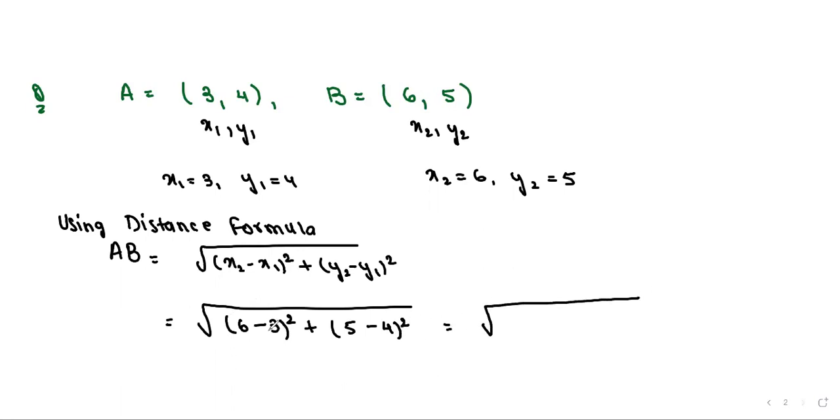Now this we can easily simplify. 6 minus 3 is 3, so 3 square plus 5 minus 4 is 1, so 1 square. 3 square is 9 and 1 square is 1. So the answer we are getting is root 10. Right, unit. So this is the answer.